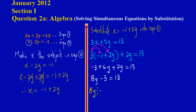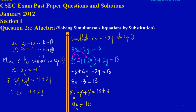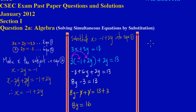Adding 3 to both sides: negative 3 and positive 3 cancel out, leaving 8y equals 13 plus 3, which is 16. So 8y equals 16. Since 8 is multiplying y, I divide both sides by 8. 8 into 8 goes once, 8 into 16 goes 2 times, so y is equal to 2.